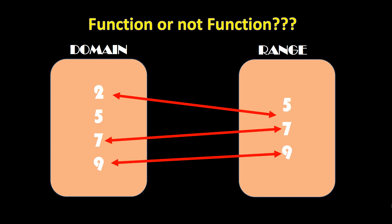Next, we have the domain again with 2, 5, 7, 9. Checking each element: 2 has a connector and it's only one — good. For 5, there is no line attached to it, so that makes it a no-no. This is not a function because each element must have a connector. If there is an input in a function, you must have an output for that input. So this representation is not a function.